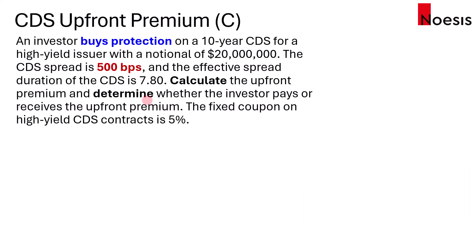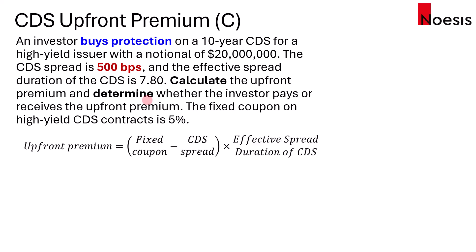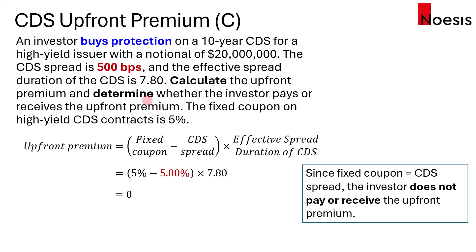If the CDS spread is 500 basis points, which is the same as the fixed coupon, then the upfront premium will be zero. In this case, no one pays or receives the upfront premium.